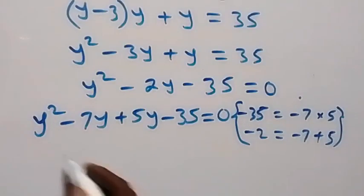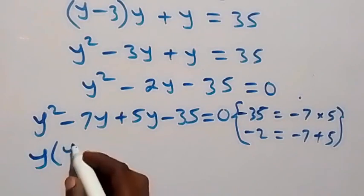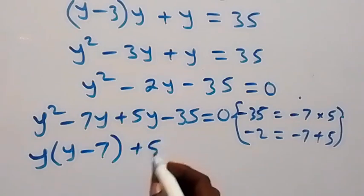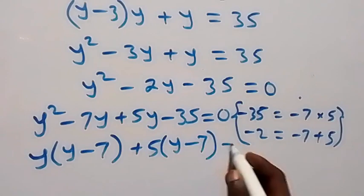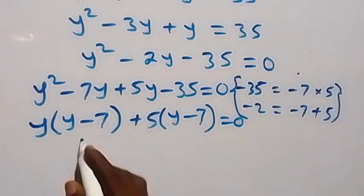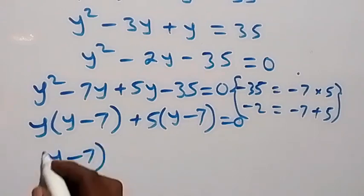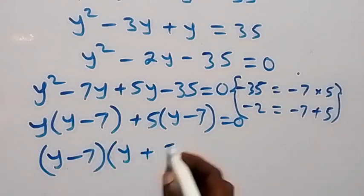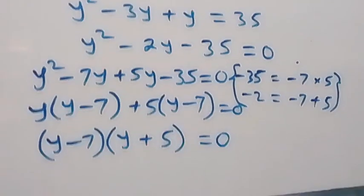When we group these two by two, we have y into bracket y minus 7, plus 5 into bracket y minus 7, equals to 0. We have y minus 7 common, and what is left is y plus 5, equals to 0.